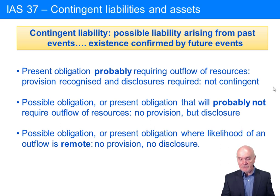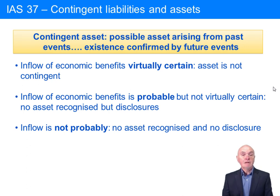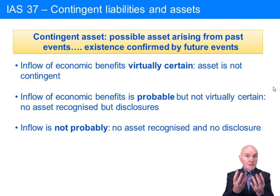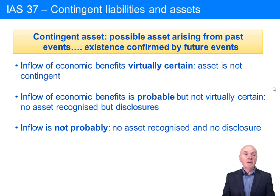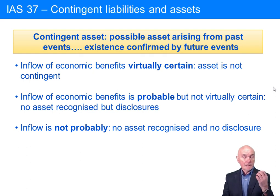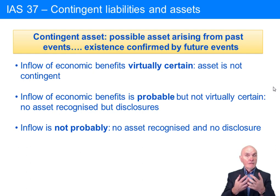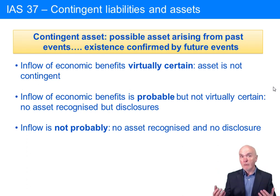Turning to assets, contingent assets appear in the same three categories. A contingent asset is a possible asset arising from past events, its existence being confirmed by future events. This could be you suing your supplier, with money potentially coming in from them. The tests here are slightly more stringent. Thinking about prudence, you want to recognize losses as soon as possible but don't want to take income or profits until it's virtually certain. So if the inflow of economic benefits — money — is virtually certain, then the asset is not contingent. This is the situation where the other party has essentially held their hands up and agreed to pay, or negotiations are underway about how much will be paid. In that case, you debit receivables and credit the appropriate account.